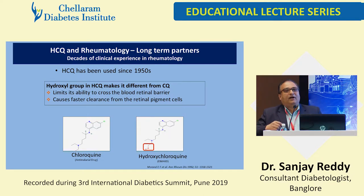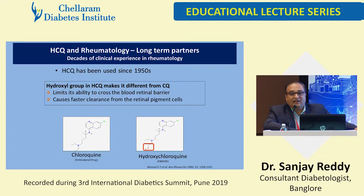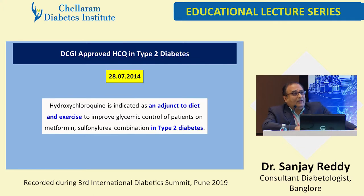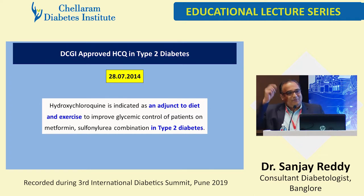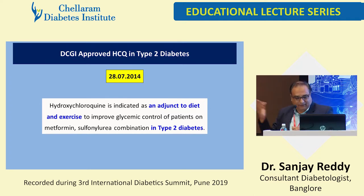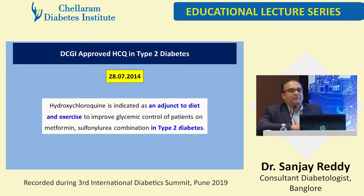Hydroxychloroquine has been used for the last 50 years as one of the DMARDs for rheumatoid arthritis and other rheumatoid conditions. If you look at earlier labels, hypoglycemia is mentioned as one of the side effects of hydroxychloroquine. It was approved for use in type 2 diabetes in 2014 by the DCGI.